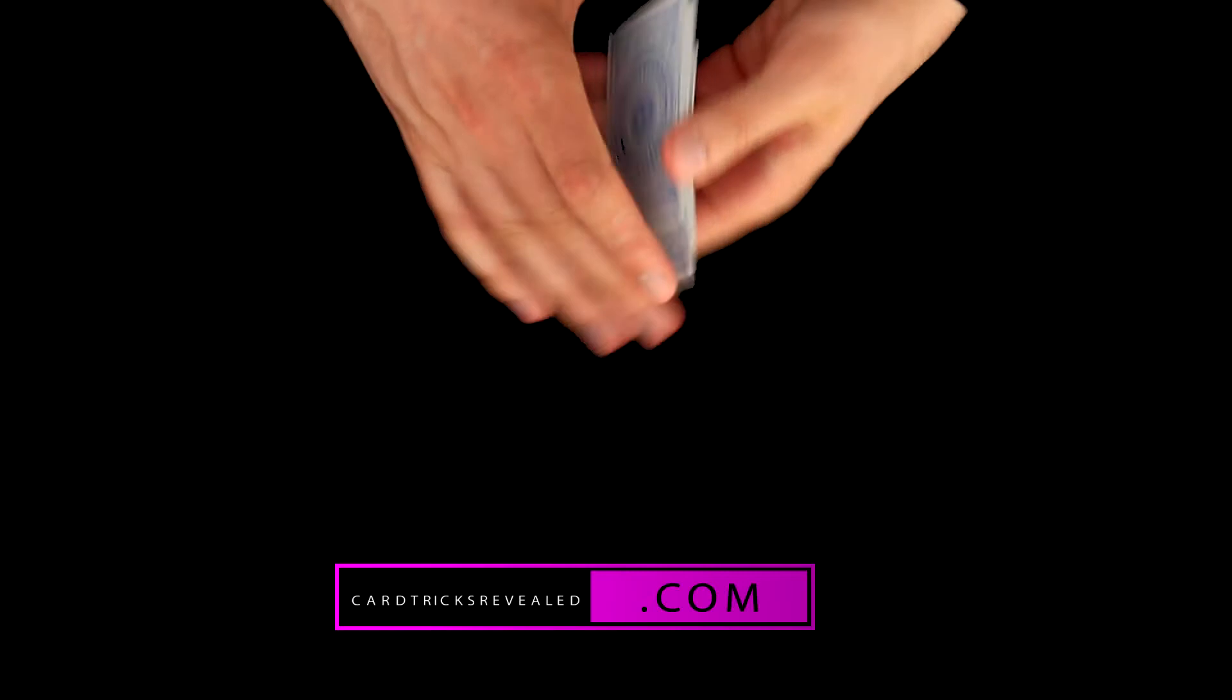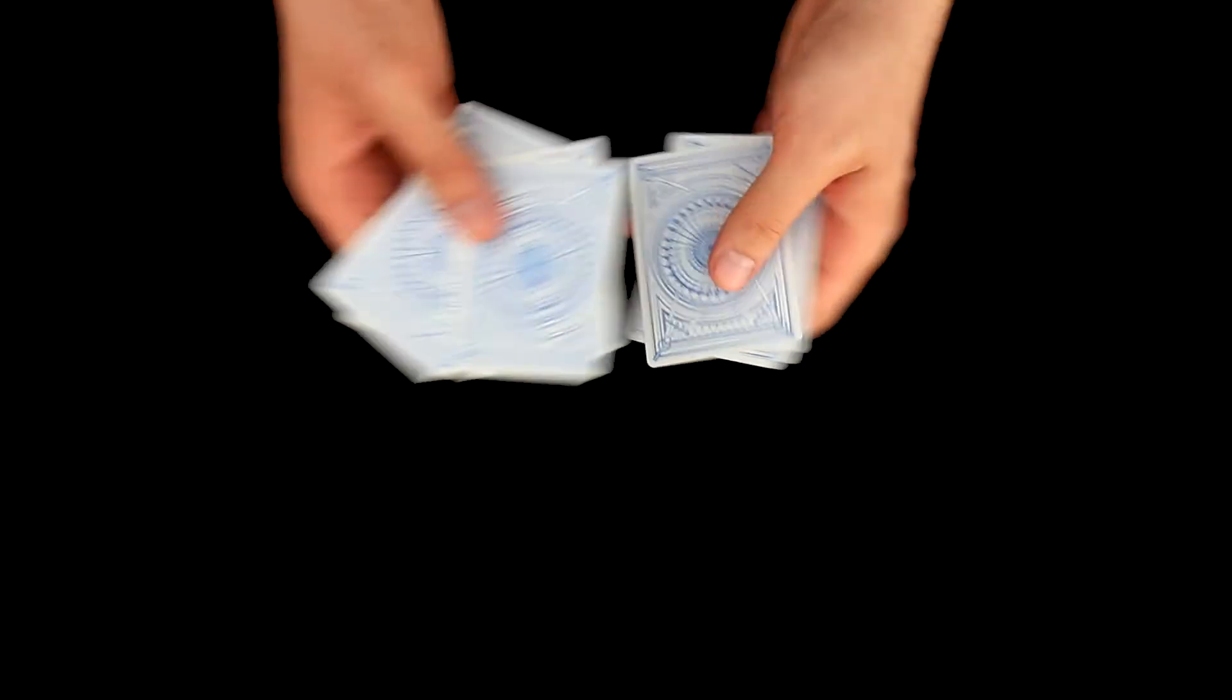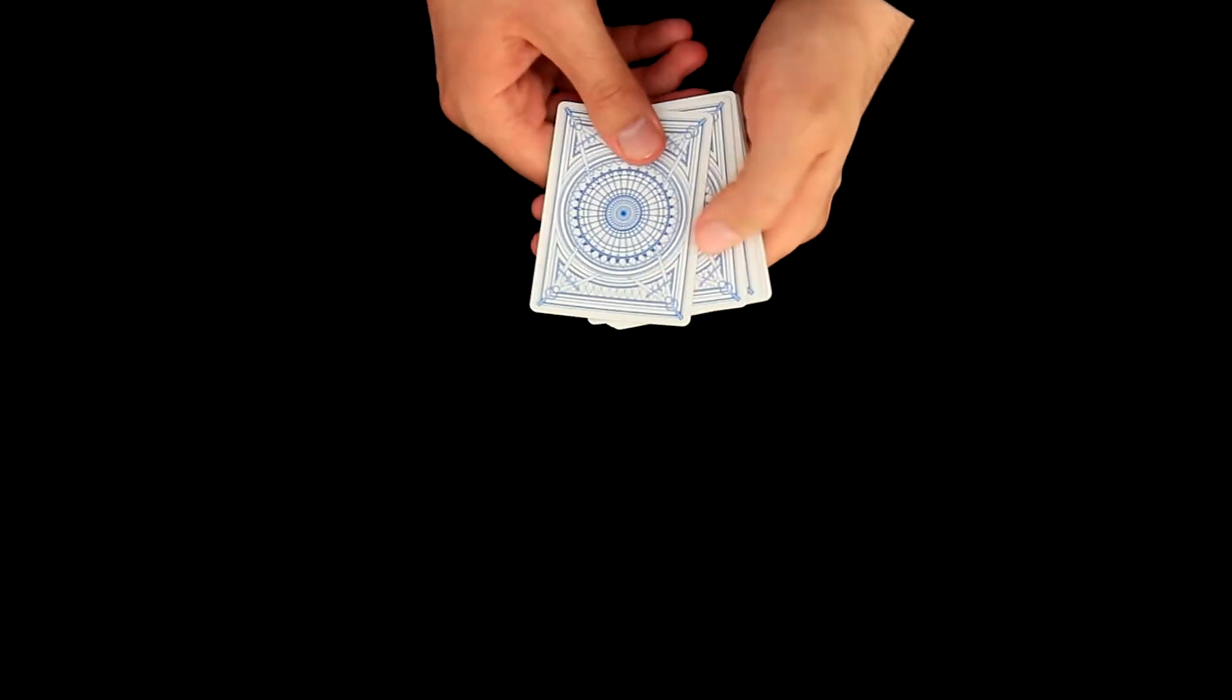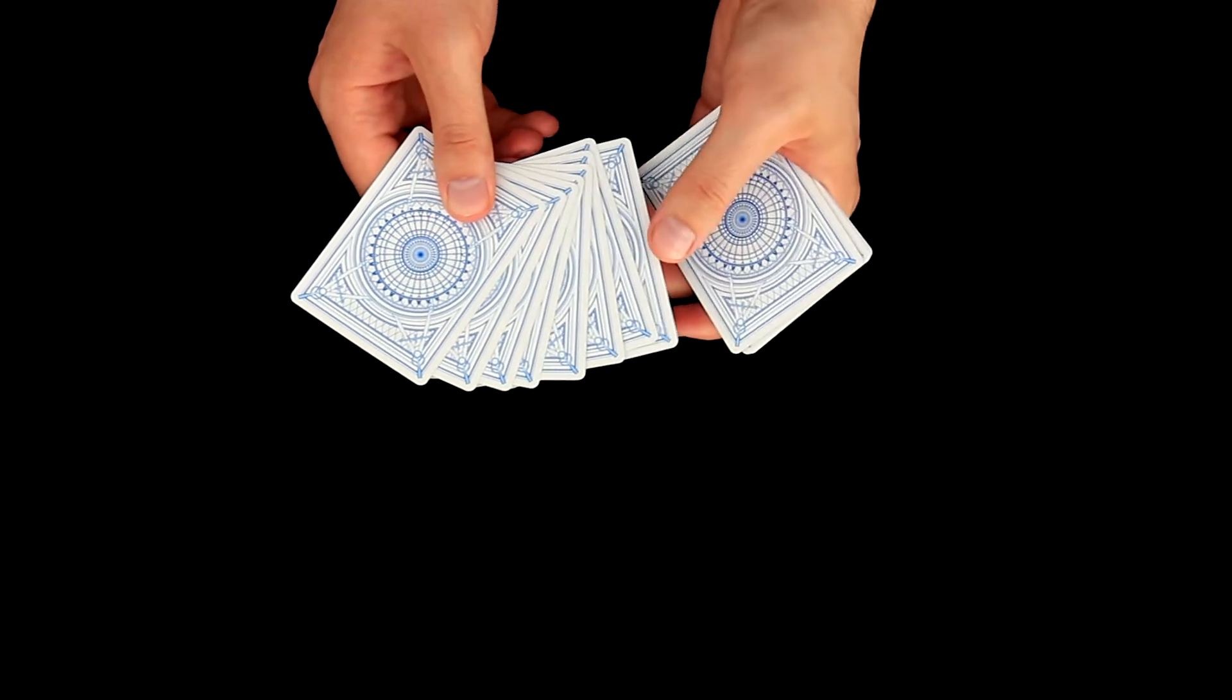Let's shuffle them like this. We can cut them as well, spectator can cut also. And then we will ask him to choose one card. Let's say he likes this card over here.